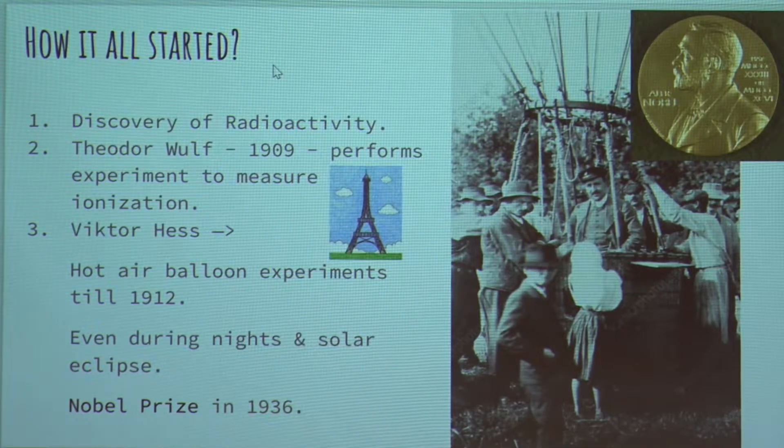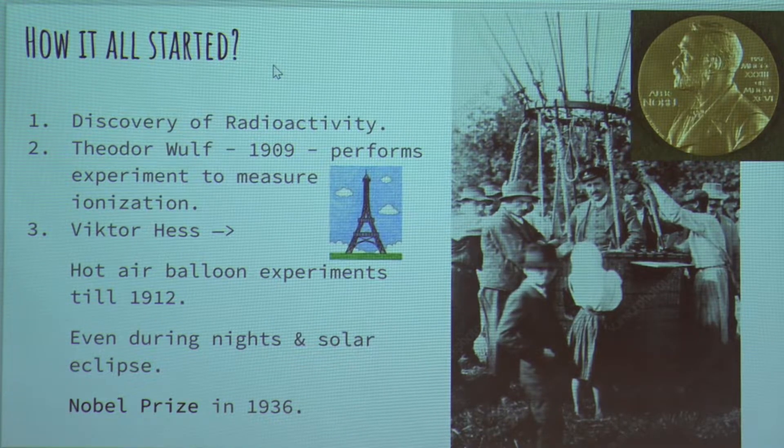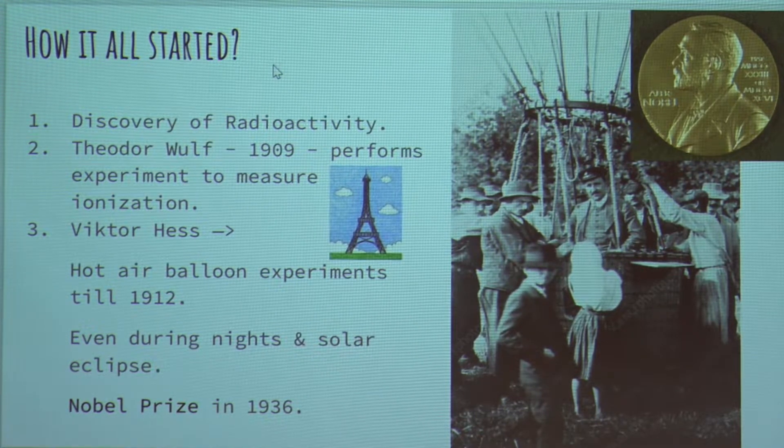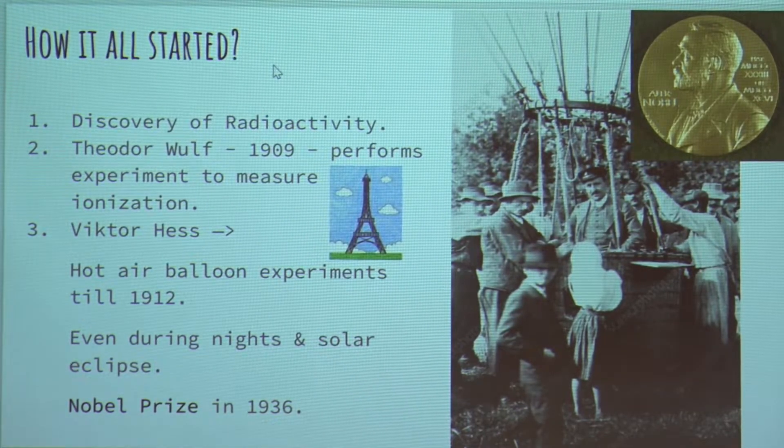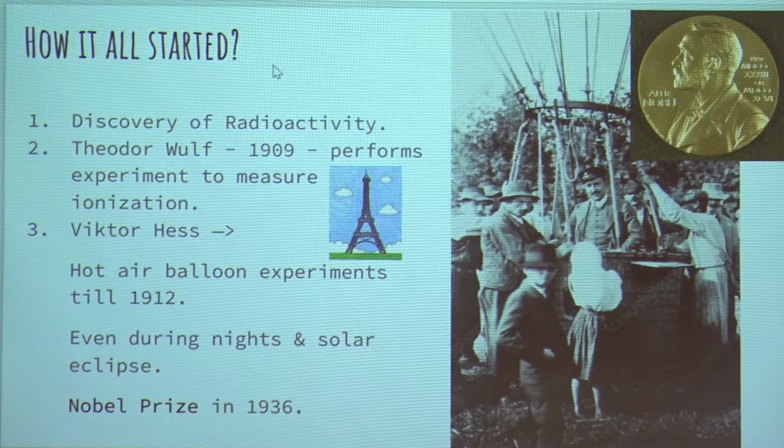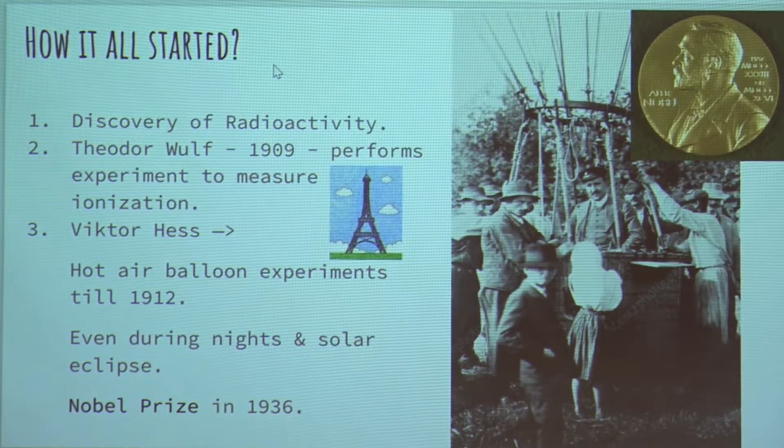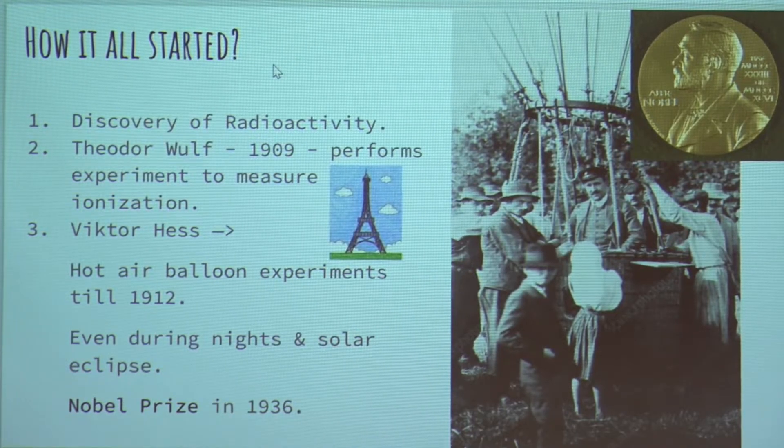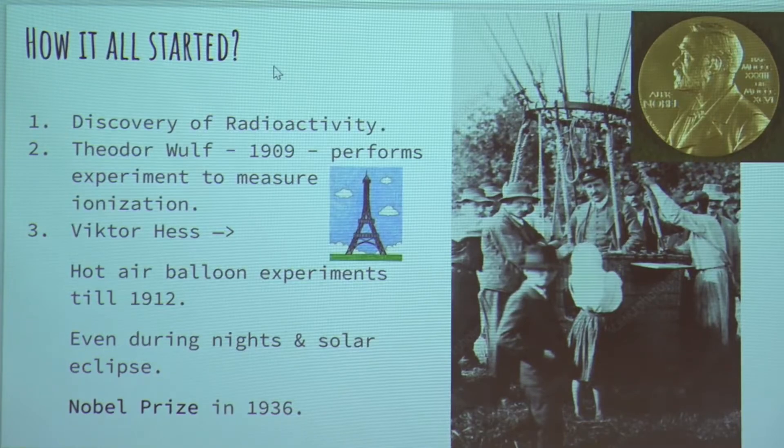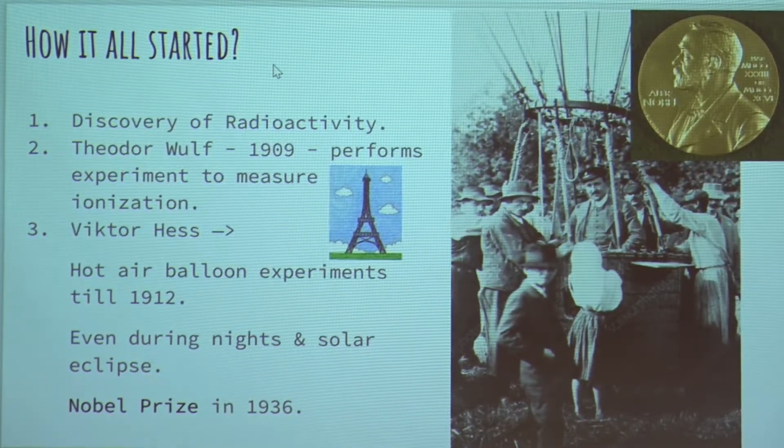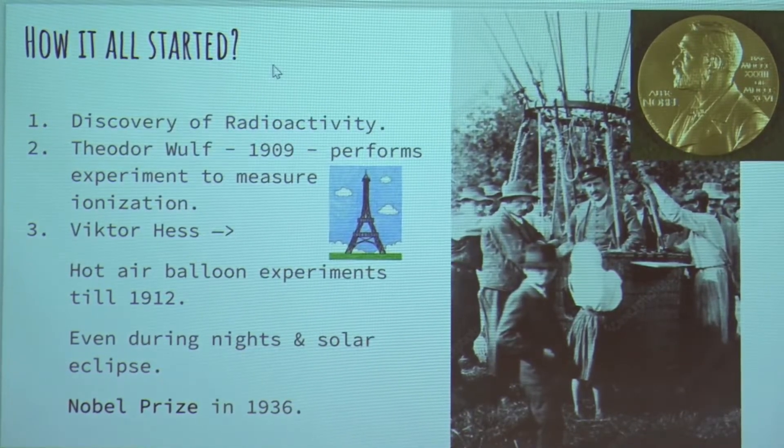So how did it all start? When radioactivity was first discovered, scientists believed that only the radiation coming from the radioactive elements in the surface could ionize the air particles, could ionize the atoms in the air. So to test this theory, Theodor Wulf in 1909 performed an experiment using an electroscope.